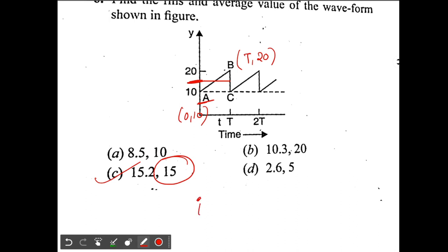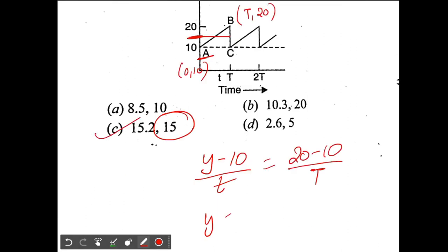I have point B whose coordinates are T comma 20, and point A whose coordinates are 0 comma 10. So I can write the equation of straight line: y minus 10 divided by t equals 20 minus 10 divided by capital T. So y equals 10t by T plus 10.